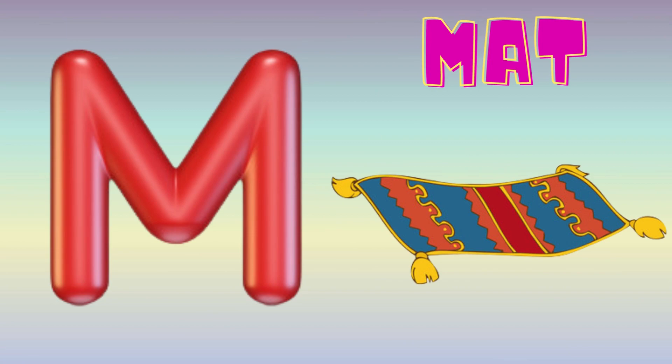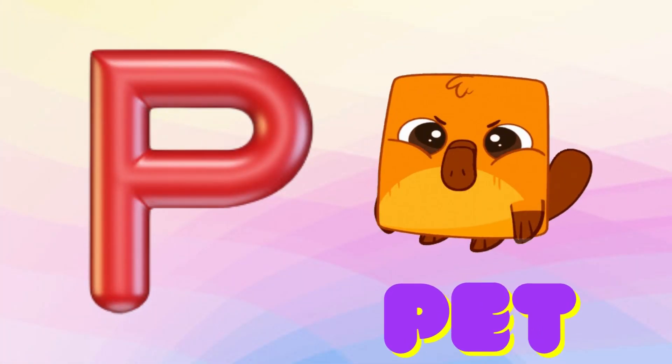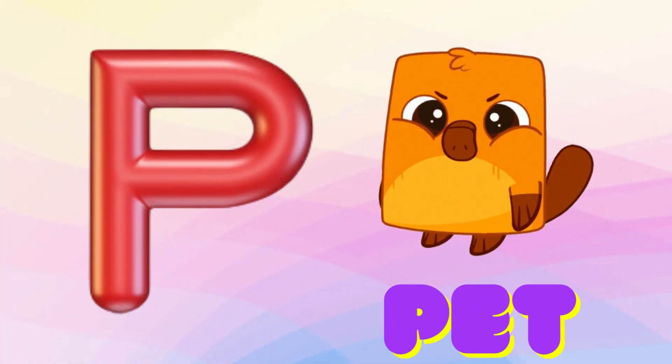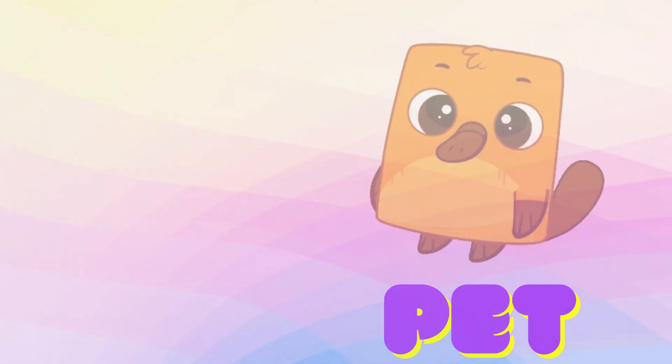M is for Mat, M-M-Mat. N is for Net, N-N-Net. O is for Orange, O-O-Orange. P is for Pet, P-P-Pet.